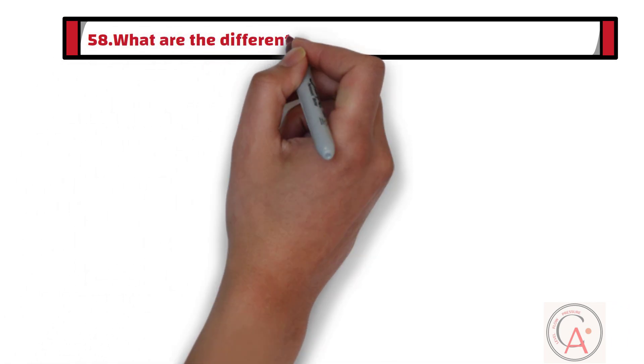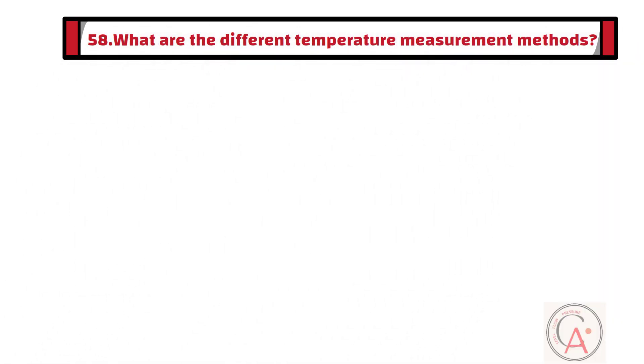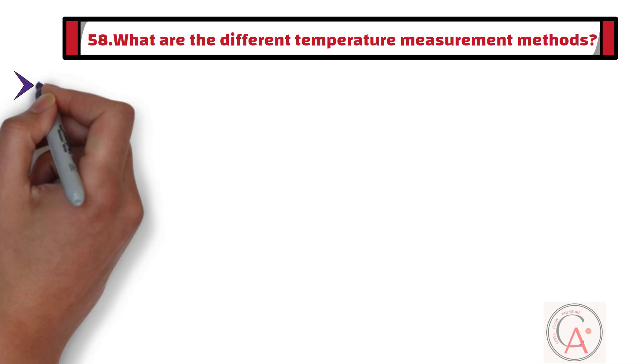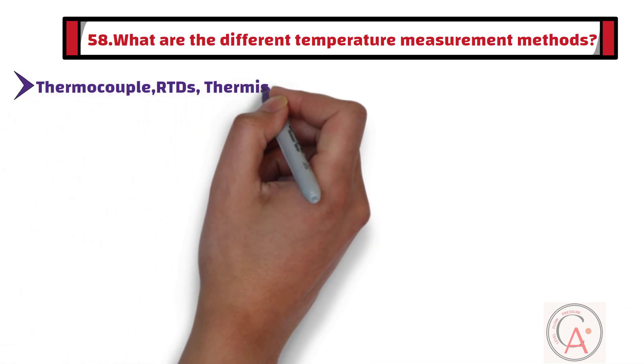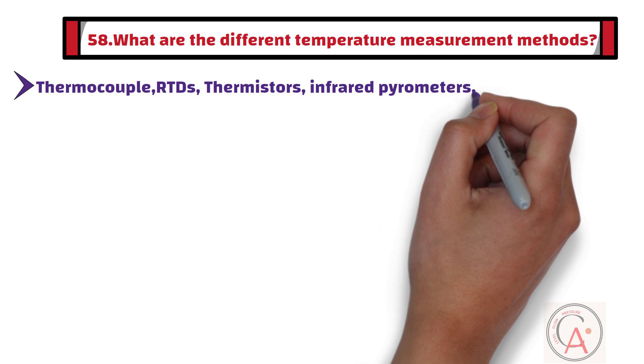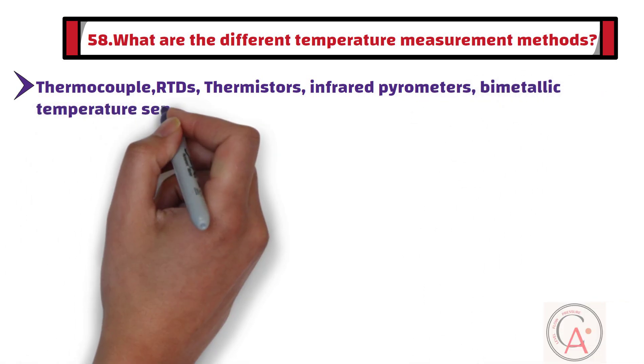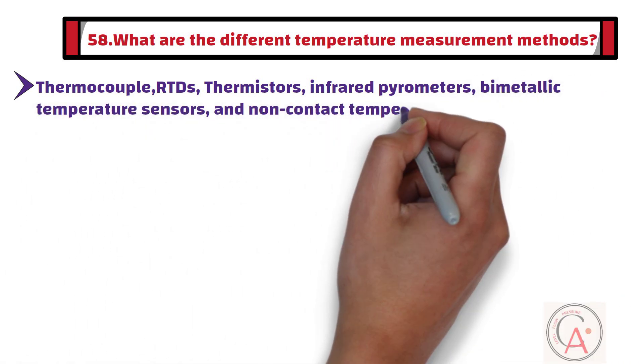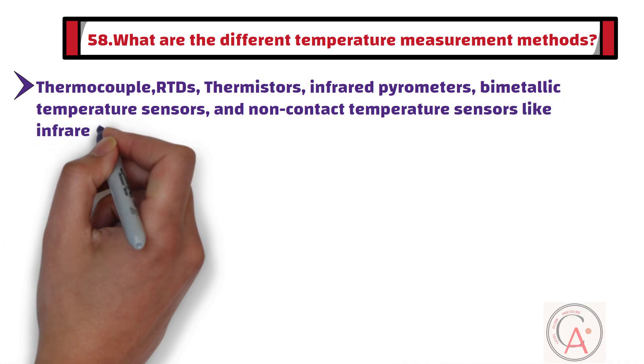Question number 58 is: What are the different temperature measurement methods? There are several temperature measurement methods including thermocouples, resistance temperature detectors, thermistors, infrared pyrometers, bimetallic temperature sensors, and non-contact temperature sensors like infrared and ultrasonic sensors.